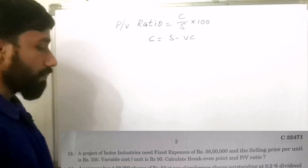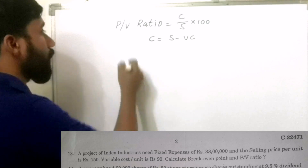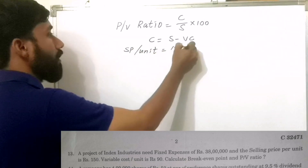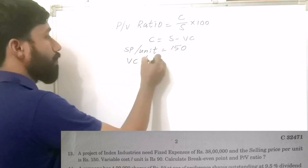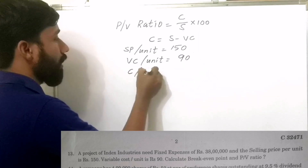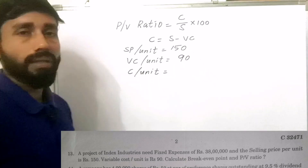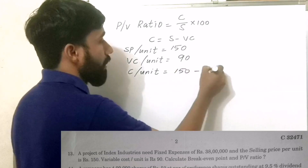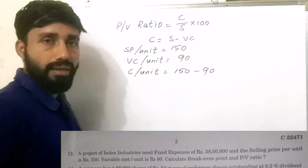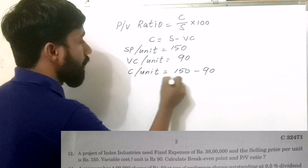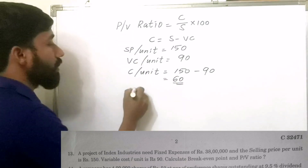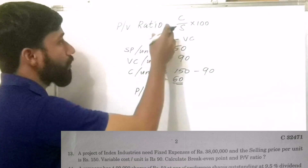In our question, the selling price per unit is Rs. 150 and the variable cost per unit is Rs. 90. Contribution per unit is 150 minus 90, that is selling price per unit minus variable cost per unit, which equals Rs. 60.